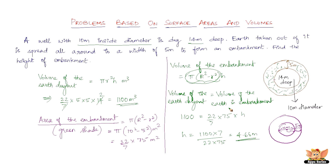So the height of the embankment is 4.66 meters if you use the earth that was dug out to fill it. All the problems we've solved based on surface areas and volumes come down to equating volumes and then finding the unknown. That's all there is to it.